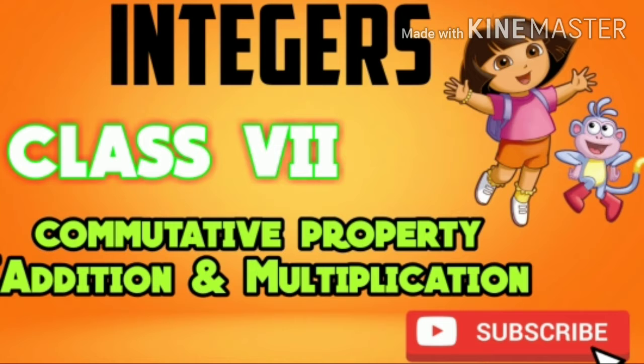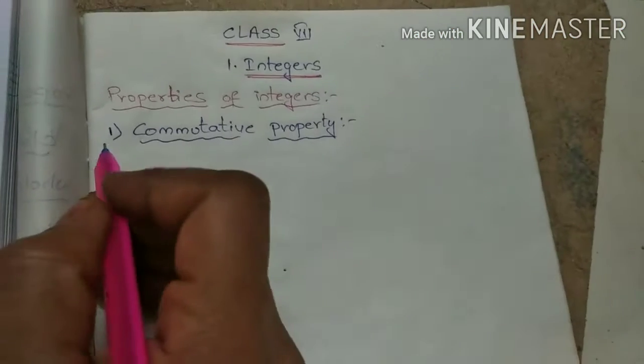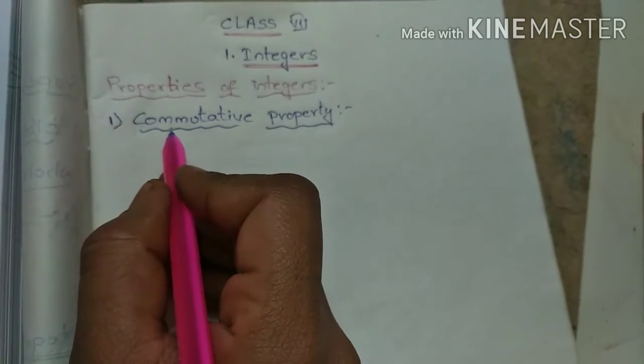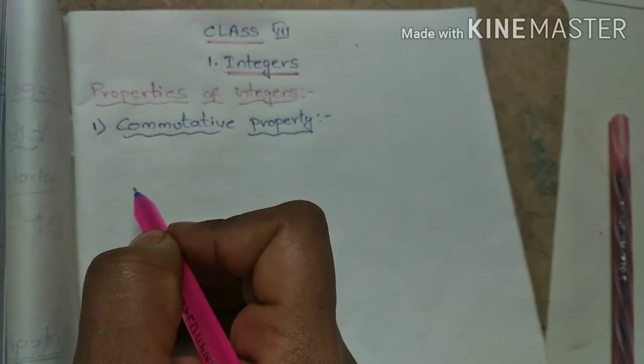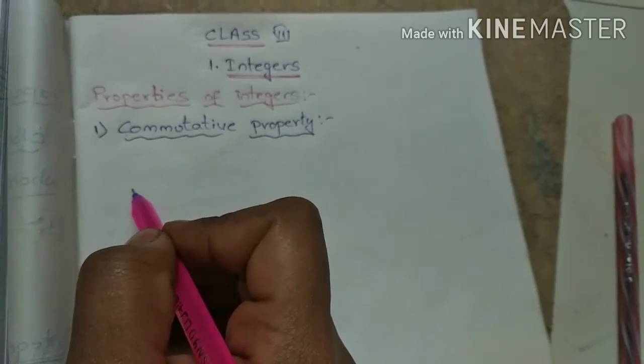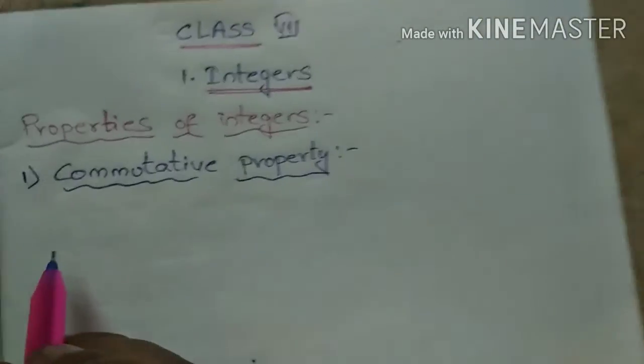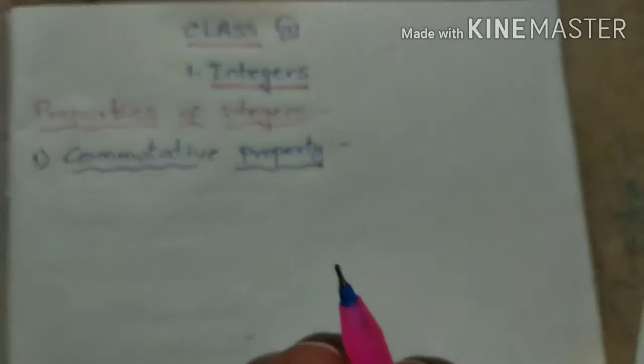If you're seeing this video for the first time, please subscribe to my channel. Now let's go to the video. The second property is commutative property. I explained closure property in the previous video. So what is meant by commutative property?